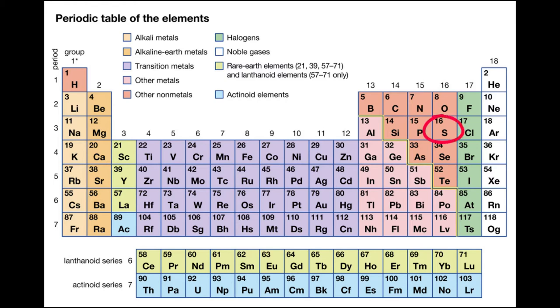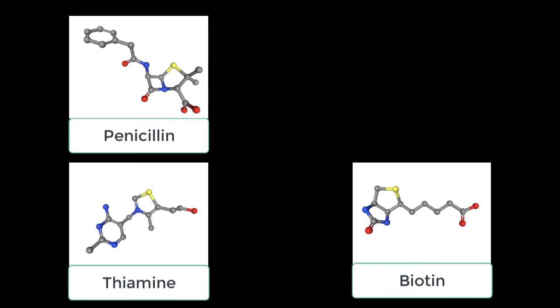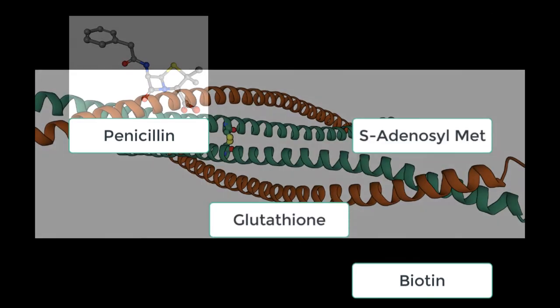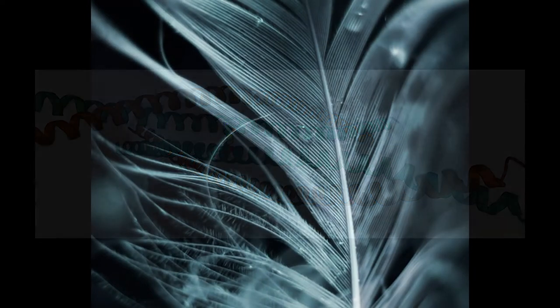Sulfur is an essential element for life. It appears in various organosulfur compounds, vitamins, cofactors, and in proteins like keratin found in skin, hair, and feathers.